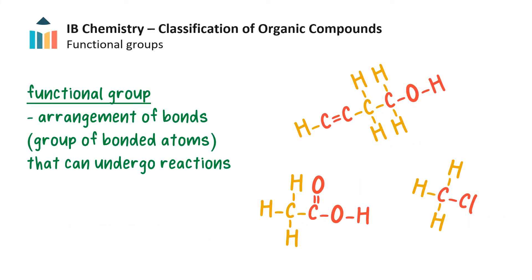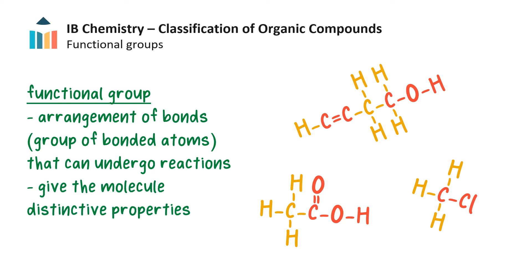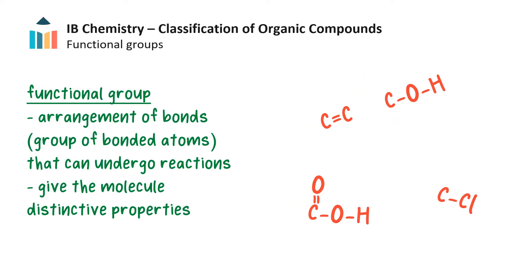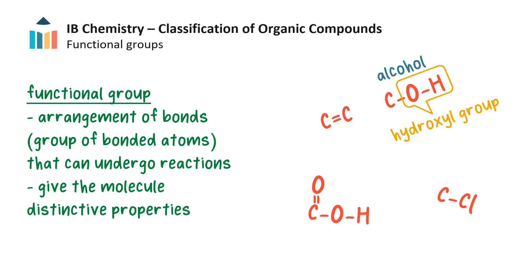A functional group is an arrangement of bonds in an organic molecule that can undergo reactions. Functional groups give a molecule distinctive properties. All bonds except carbon-carbon single bonds and carbon-hydrogen bonds may be referred to as functional groups. The class of a compound is determined based on the functional groups it contains. For example, a compound containing the hydroxyl functional group is an alcohol. The functional group itself usually has a name — the alcohol functional group is called a hydroxyl group.